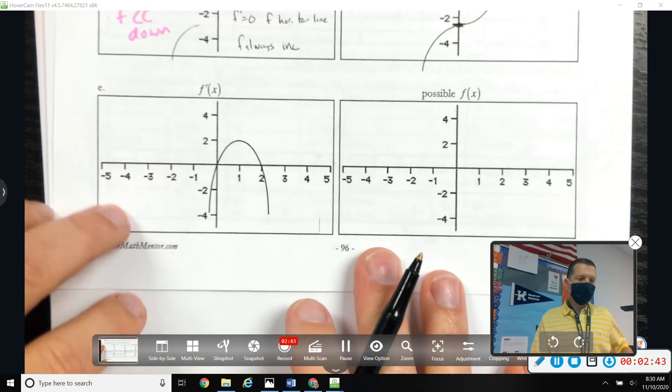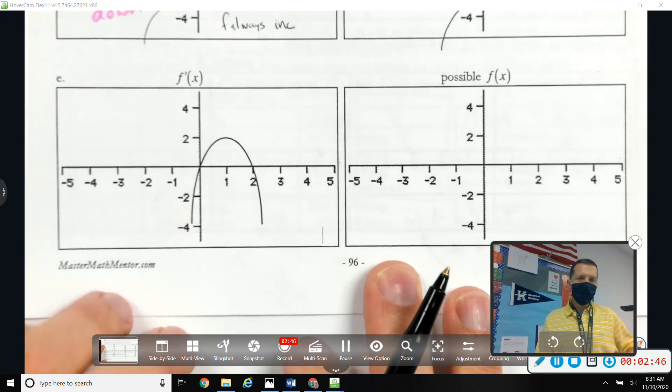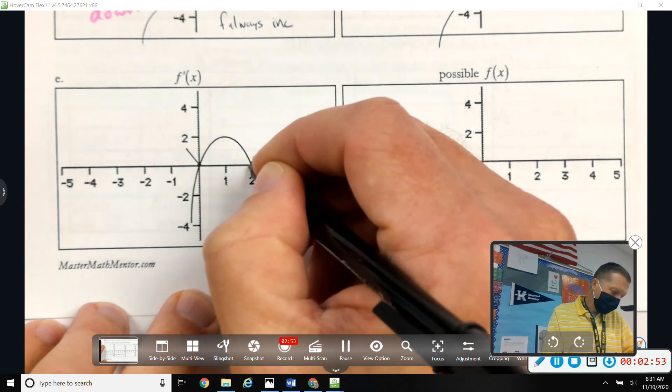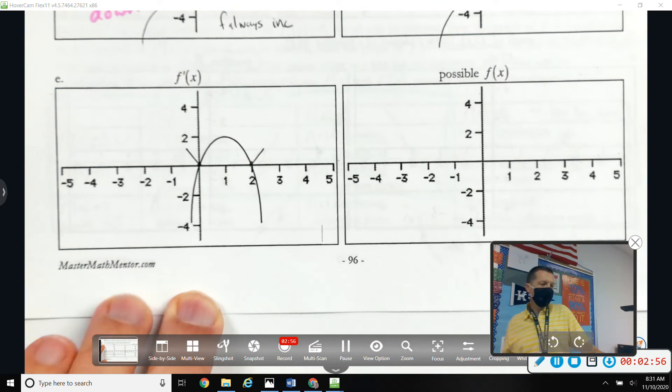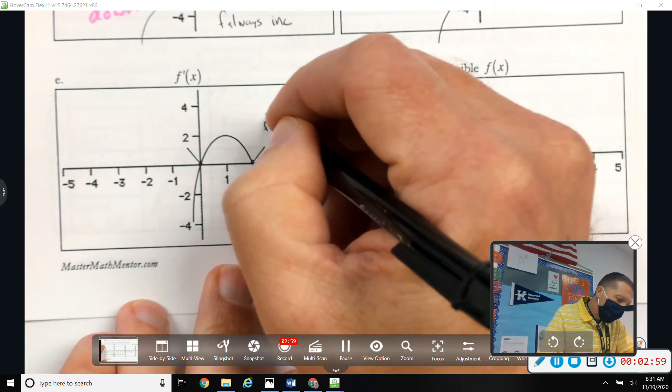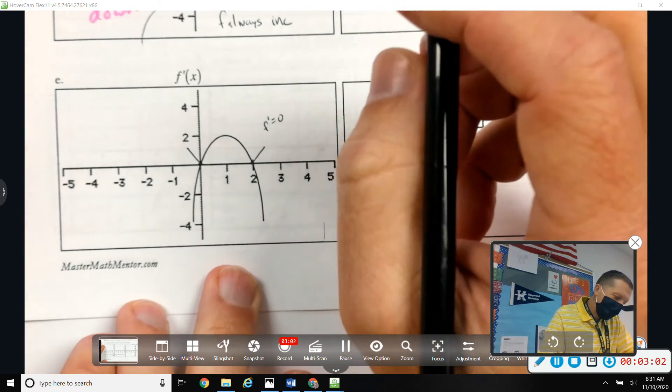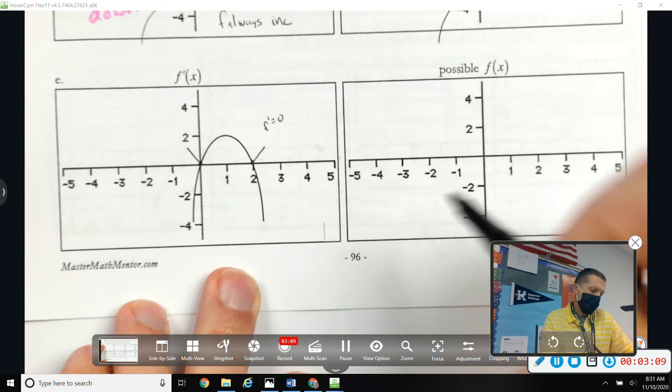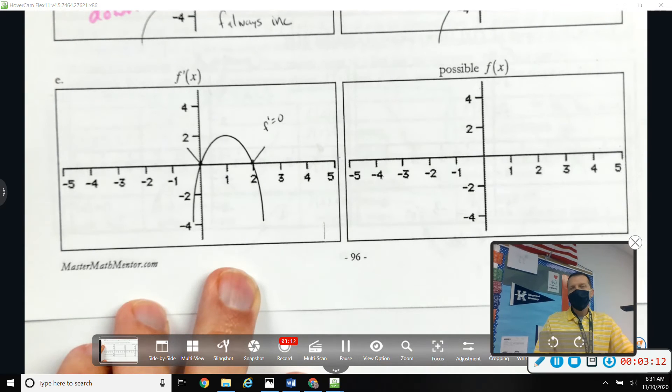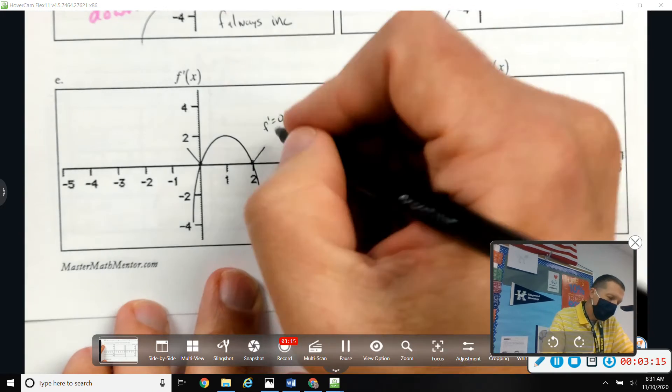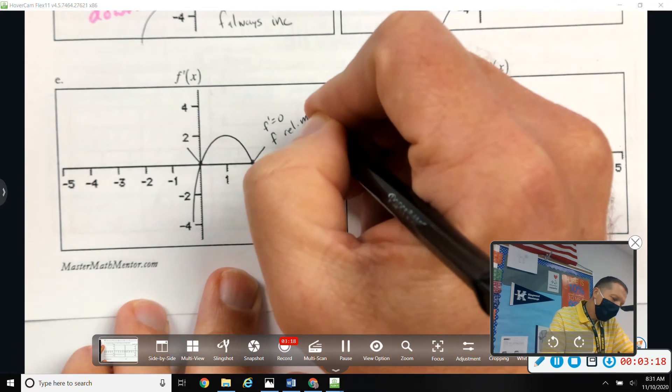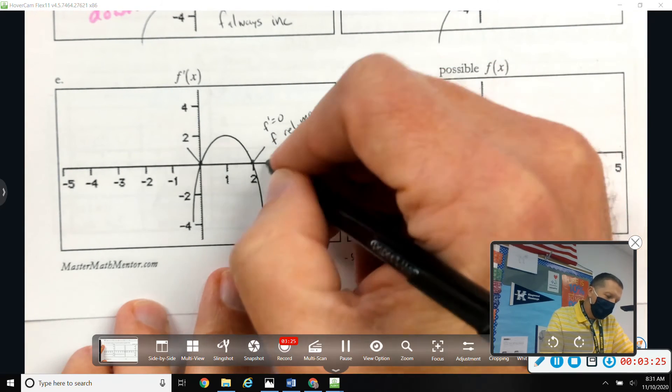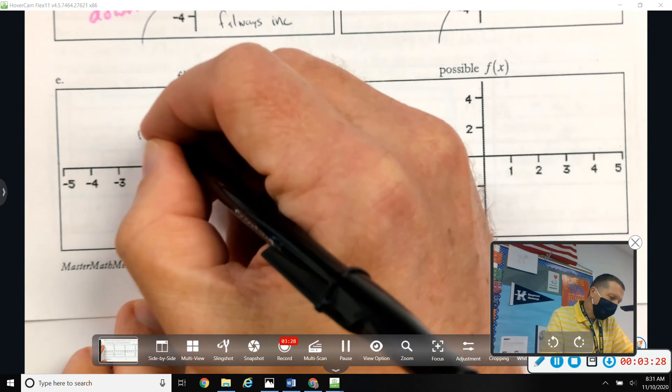All right, let's do E. Lots of stuff going on in E. So let's figure out these kind of key points here. Or I guess we can call them critical points, because F prime is zero. F prime equals zero. What about max and min, or neither, at X equals two? What's going on there? Is that a relative max or relative min? Why is it a max? Right, F prime changes increasing to decreasing. So I've got a relative max at two, and then a relative min at zero.